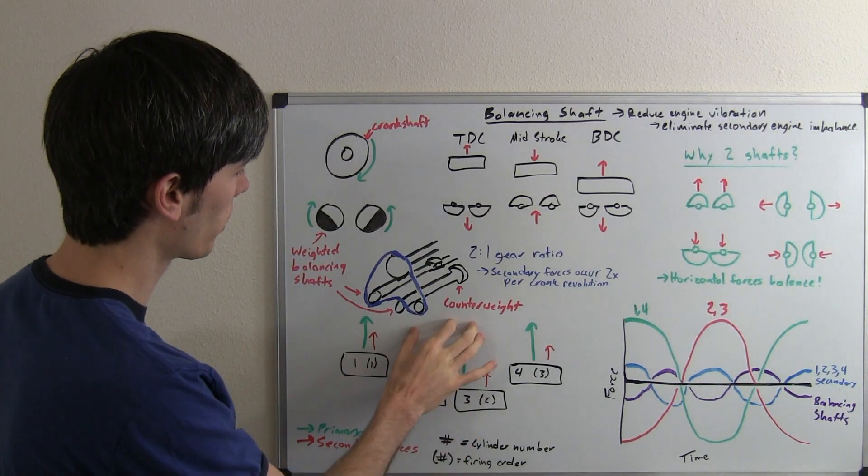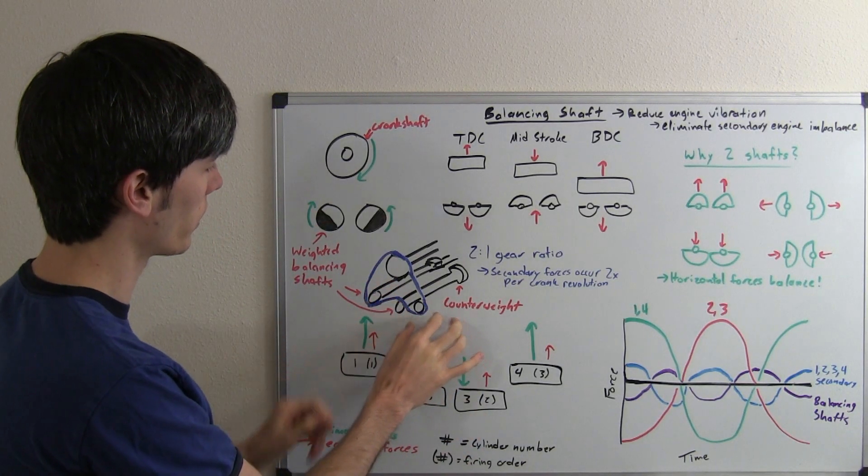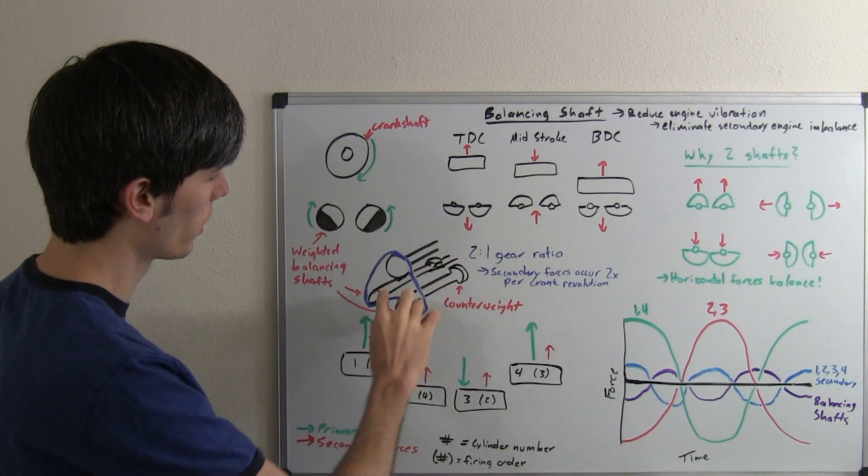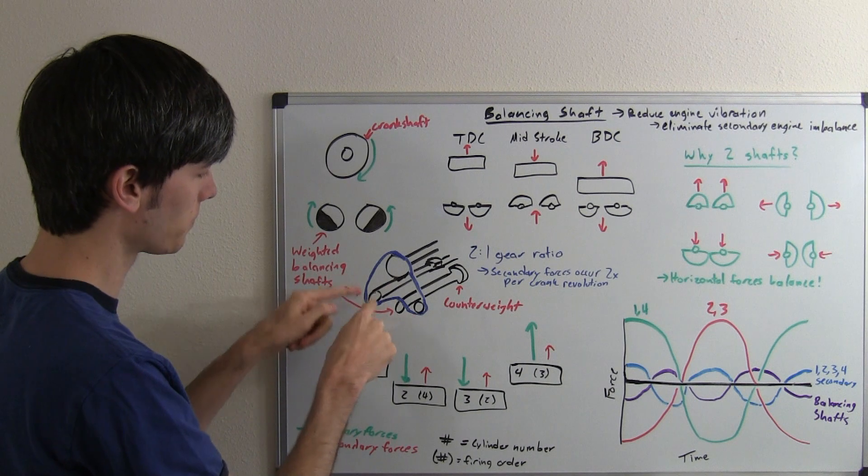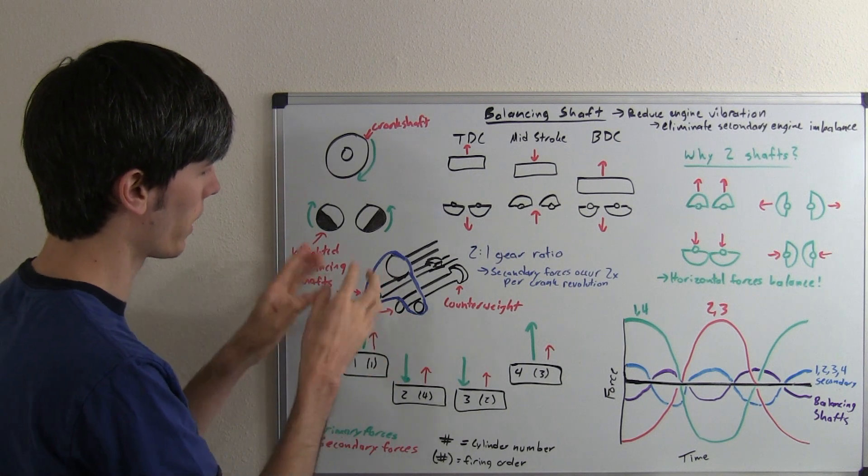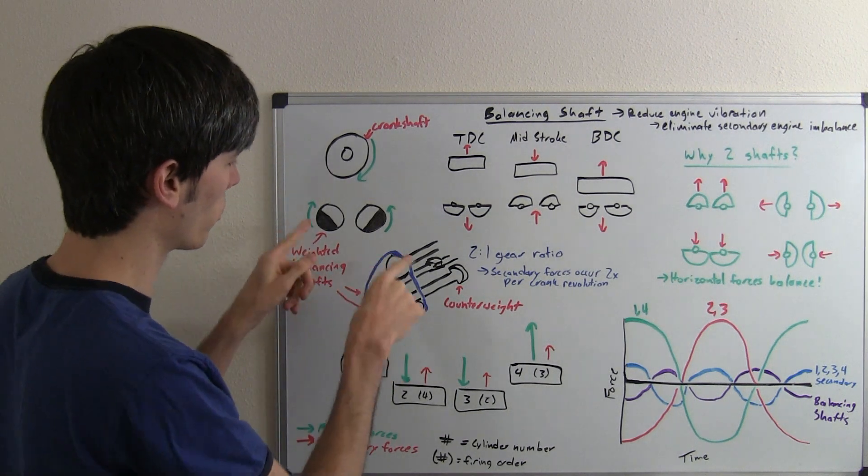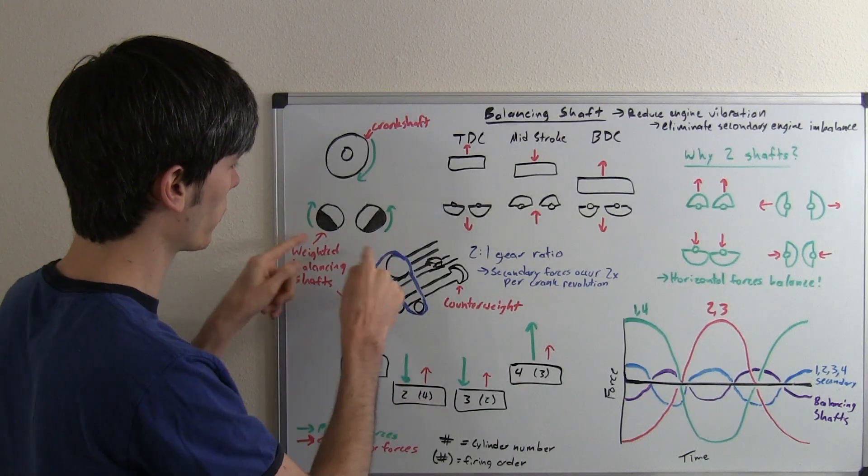In an inline four-cylinder engine, you've got your crankshaft and your two balancing shafts. These are going to rotate towards each other or away from each other - either way it would work - but basically they're going to rotate in opposite directions.